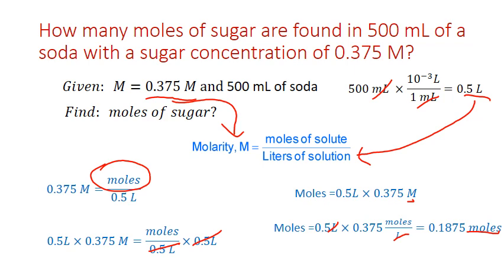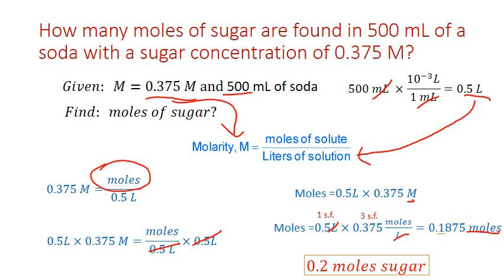For significant figures: 500 milliliters without a decimal point is ambiguous, so we treat the trailing zeros as placeholders — giving one significant figure (0.5 liters) — while the molarity has three. We round to the least number of significant figures, which is one, giving us 0.2 moles of sugar.